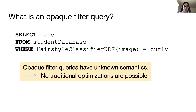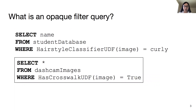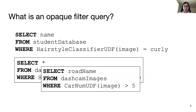For example: select the images containing crosswalk from a dashcam image database; select the road where there are more than five cars on average; select the positive reviews from a review database, and so on.